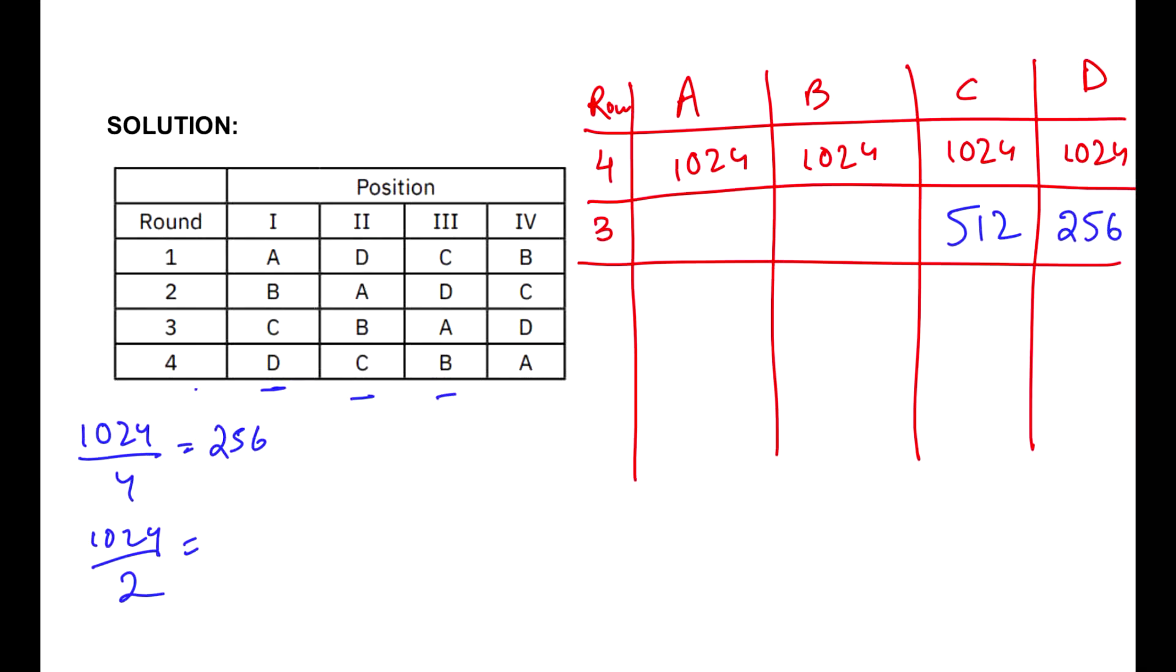Now, ab aajayav second rank pe. In the second rank was given to C, so second rank wale logo ka value double ho raha tha. The value was getting doubled, so right now I will just half their value. So, if 1024 ka half karte hai, what do we get when we do the half of this value? We would get 512. So, that means I can write 512 at the end of round three for C. Now, the person who came third, their value will remain the same. So, that is 1024 for B in the end of round three. And now comes the interesting part for all of you. So, please pay attention over here.